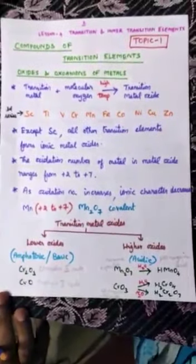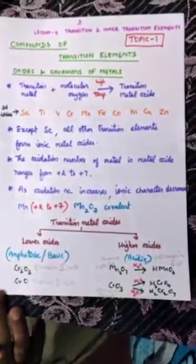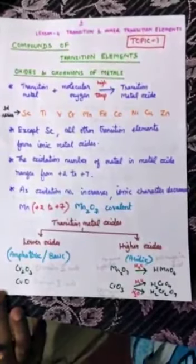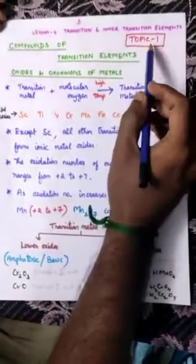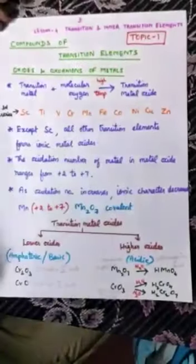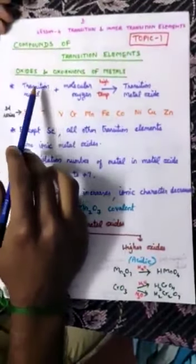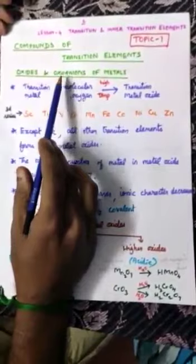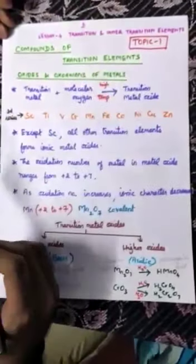Dear students, in this video I am going to explain about lesson number 4: Transition and Inner Transition Elements. My topic number 1 heading is Compounds of Transition Elements, and the first heading within that is Oxides and Oxoanions of Transition Metal.